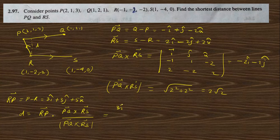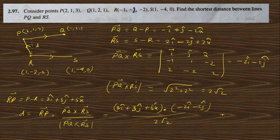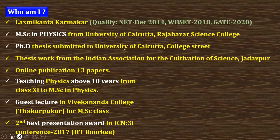The shortest distance d = |rp · (PQ × RS)| / |PQ × RS| = (3i + 3j + 5k) · (−2i − 2j) / (2√2) = (−6 − 6 + 0) / (2√2). Taking the magnitude and simplifying gives 3√2. Since distance cannot be negative, we take the absolute value: the answer is 3√2.